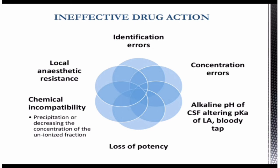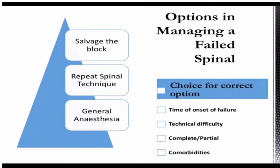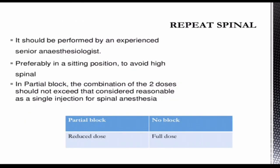Options in managing a failed spinal include salvaging the block, repeating the spinal technique, or converting to general anesthesia. A repeat spinal should be performed by an experienced senior anesthesiologist, preferably in a sitting position to avoid high spinal. In case of partial block, the combination of the two doses should not exceed what would be considered reasonable as a single injection for spinal anesthesia.